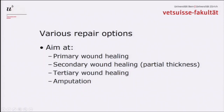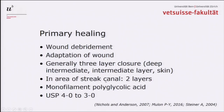We have various repair options. We can aim at primary wound healing, which we usually do. We can aim at secondary wound healing, but only if a partial thickness laceration is present; otherwise we have a permanent opening into the udder, which means mastitis and infection. We may aim at tertiary wound healing after secondary, or at teeth amputation. For primary wound healing, we perform wound debridement, taking off a very small strip of skin in the area of the wound edges, then adapt the wound. I usually use a three-layer closure with a deep intermediate layer, a more superficial intermediate layer, and a skin suture.